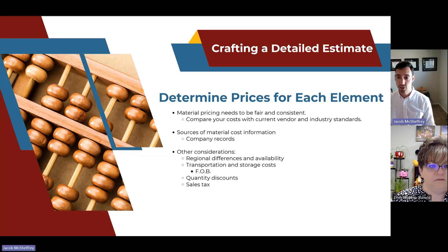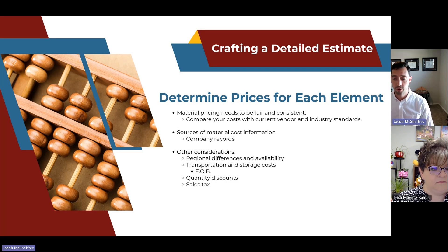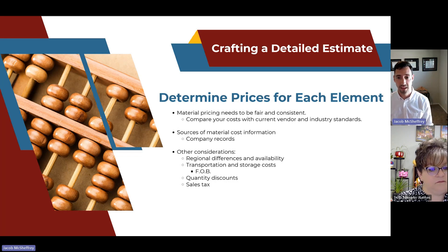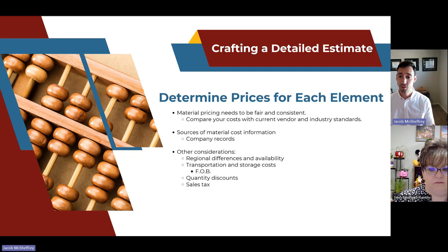Next, determine prices for each element. Material pricing needs to be fair and consistent — compare your costs with current vendors and industry standards. In government contracting, the margins are already razor tight, so marking up supplies to increase profit will make your bid non-competitive. The best source of material cost information is your own company records: past performance, past estimates. That proprietary data — how much materials cost and how much time your team needs — is the most valuable asset when crafting an estimate.